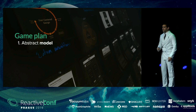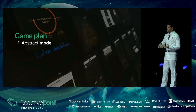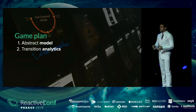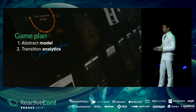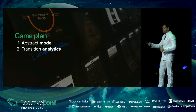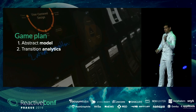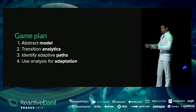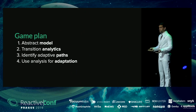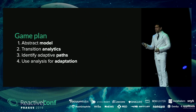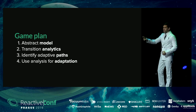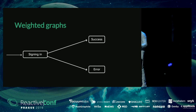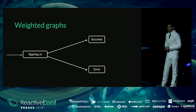Here's the game plan. First, we want to represent this app as an abstract model using state machines and state charts. Then we're going to use transition analytics to determine the frequency of how often the user goes from one state to the next. Then we identify the paths that could be adaptive and improve the user experience, using the analysis from step two in that adaptation, feeding it back in real time. To do this we need a few concepts — first, weighted graphs.